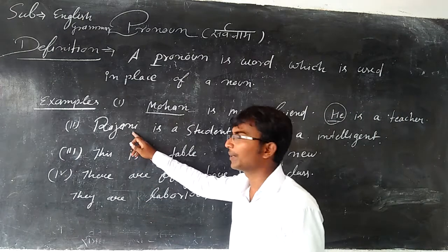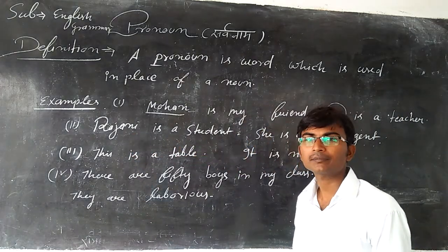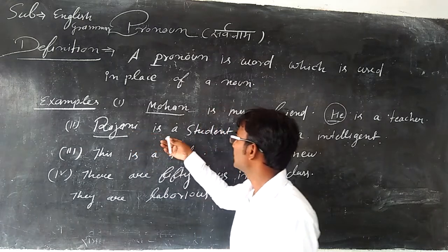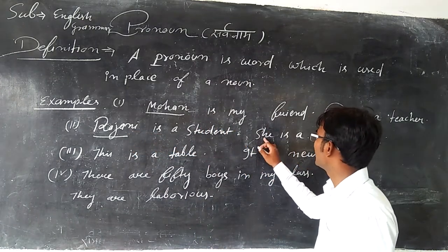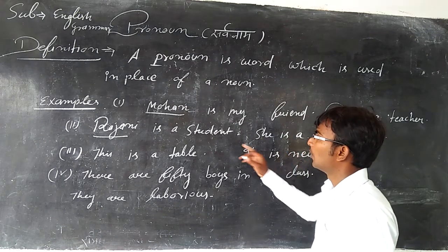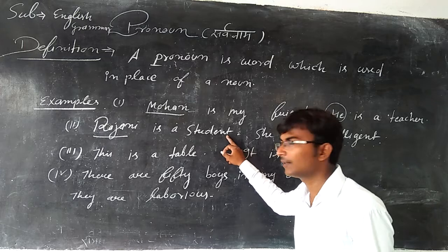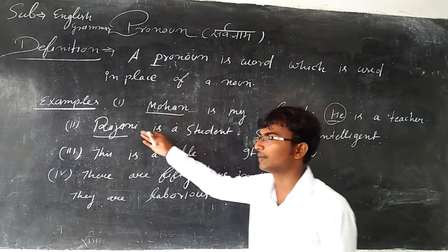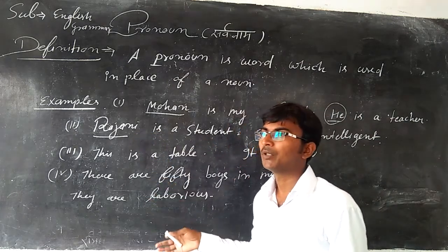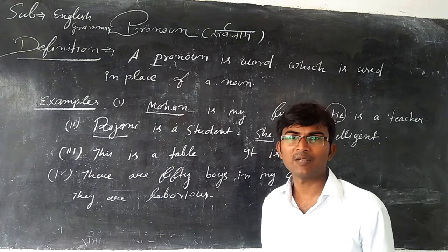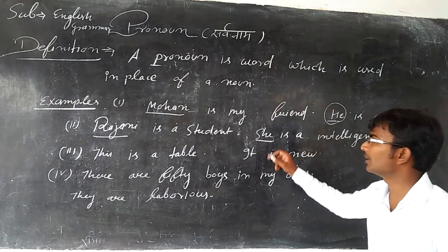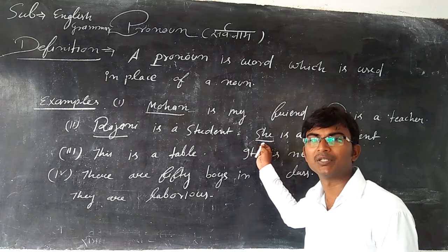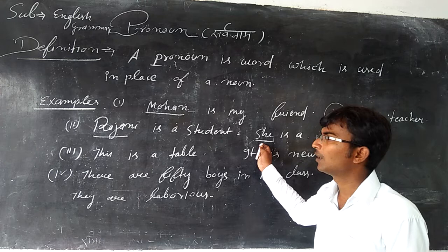Another example: Rajni is a student — here Rajni is a noun. But when we talk about Rajni, we use 'she' here: 'She is a student.' So here 'she' is a pronoun, not Rajni. Because we use a pronoun to avoid repetition. If we write Rajni again, the beauty of the sentence will be destroyed. That is why we use a pronoun.